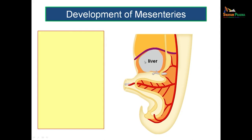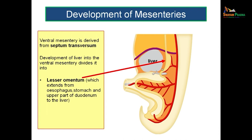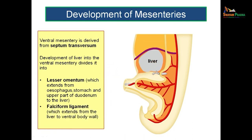The ventral mesentery is a derivative of the septum transversum. With the development of the liver in the ventral mesentery, it is divided into two segments: the lesser omentum — extending from the lesser curvature of the stomach to the liver, down to the upper part of the duodenum — and anteriorly, the falciform ligament, extending from the liver to the anterior abdominal wall. So the ventral mesentery is divided into the lesser omentum and the falciform ligament with the development of the liver.